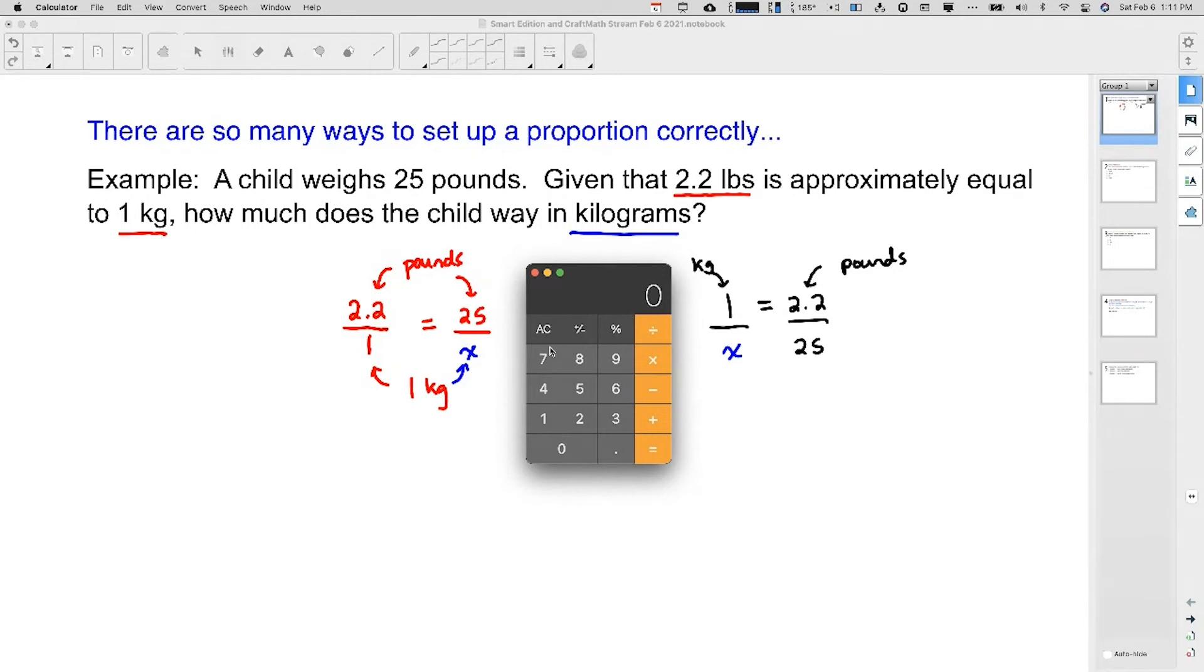What I want y'all to think about is when we cross-multiply here, for example, this example, we're going to take 2.2 times X. Well, notice we're going to take 2.2 times X over here on this side as well.